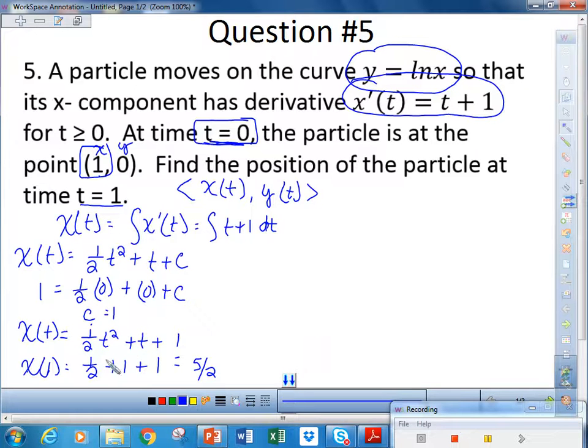Now, that's my x position. I need to find the y position. There's one of two ways I can do that. The easiest way is that I know at t equals 1, x is 5 half. So therefore y is equal to the natural log of x, which is 5 half. So I could write my position as 5 half, natural log of 5 half. That's the easiest way of doing it.